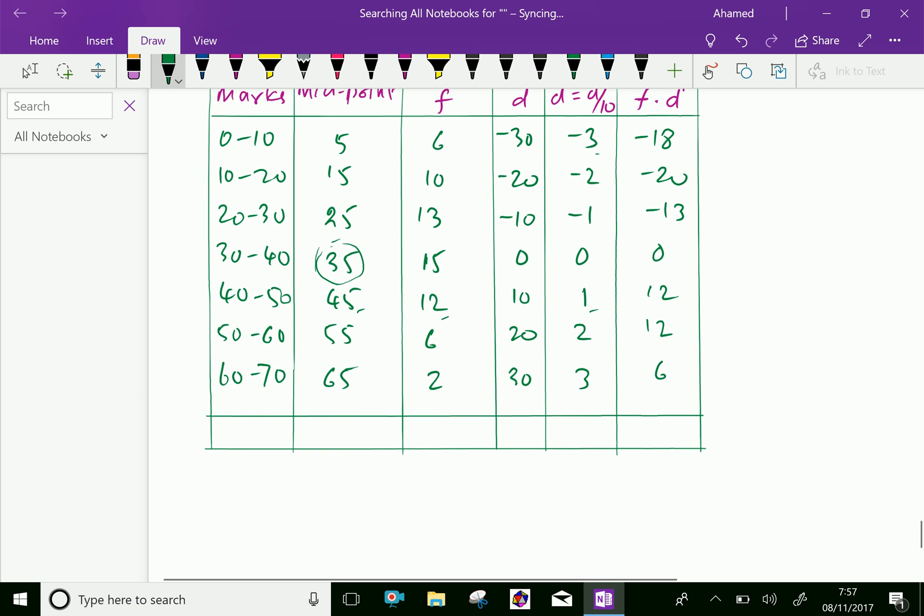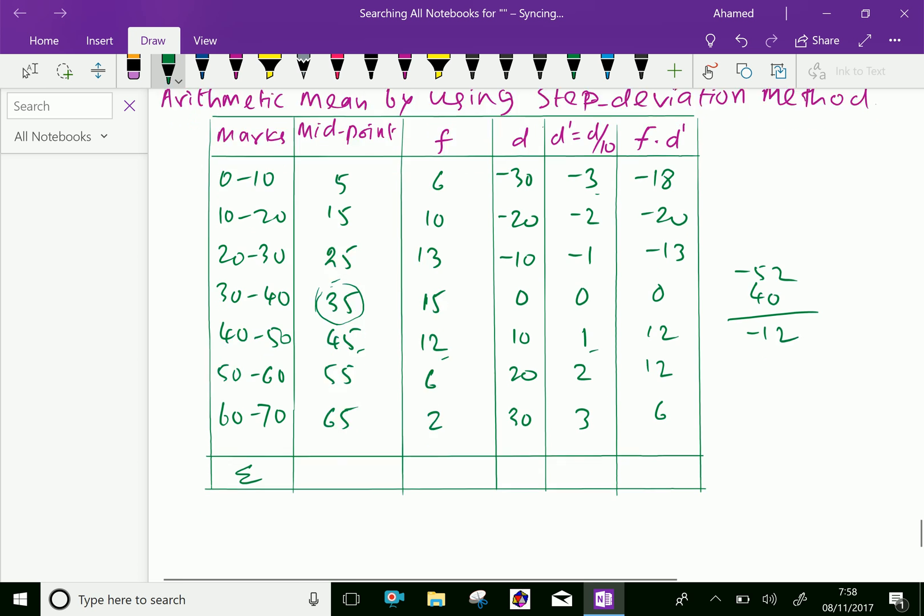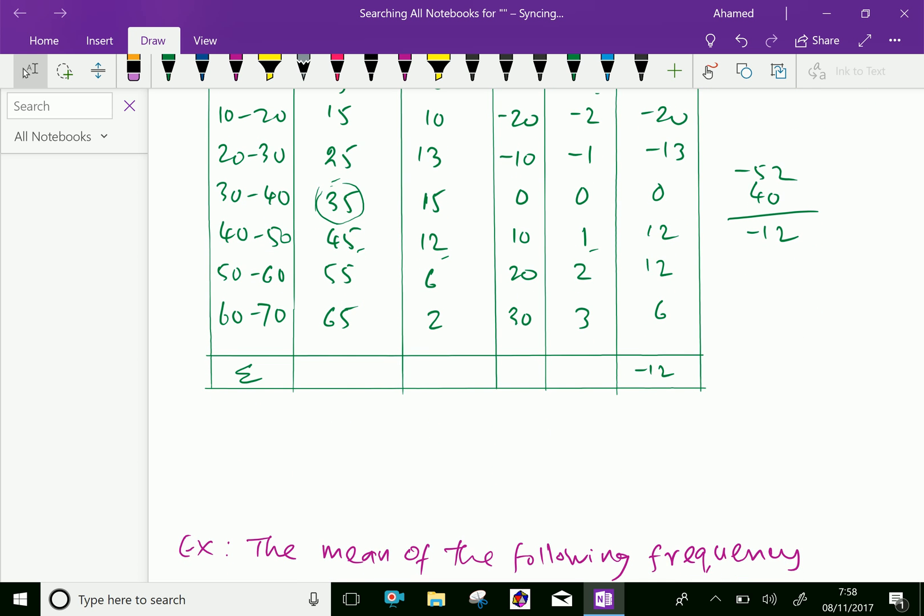Now, the sum of f dot D': 6 plus 12 is 18, plus 12 is 30, plus 6 is 40. The positive is 40, and the negative is 13 plus 20 is 33, plus 18 is 51. Wait - 18 plus 20 is 38, plus 13 is 51. The difference equals minus 12, so write minus 12 here.